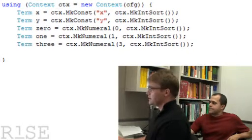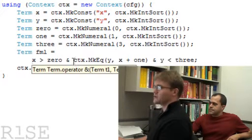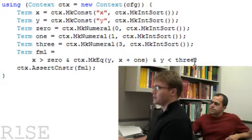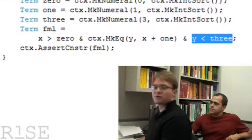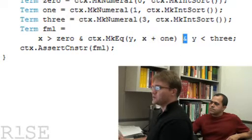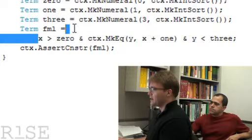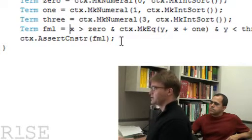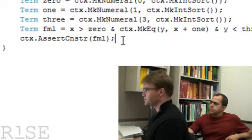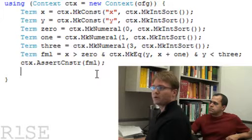So given these declarations, we can now create our formula. The C Sharp API has some, or .NET API, allows overloading a few operators. So greater than and less than are overloaded. And you can create the formula X greater than 0 or Y less than 3 directly just by writing it using the infix notation. Logical and is also overloaded. So this you can just write directly. Now equality is not overloaded. So here we're using the lower level functions for creating the equality that says Y equals X plus 1. And so now we have created this formula. And after creating the formula, we can then assert that the formula holds true in the current logical context.